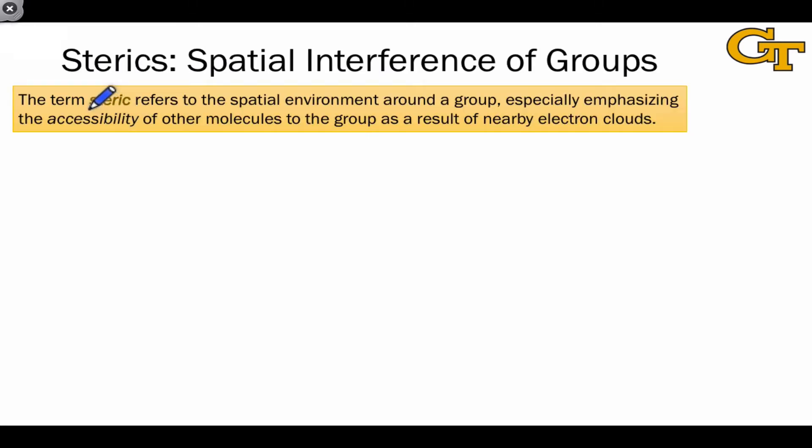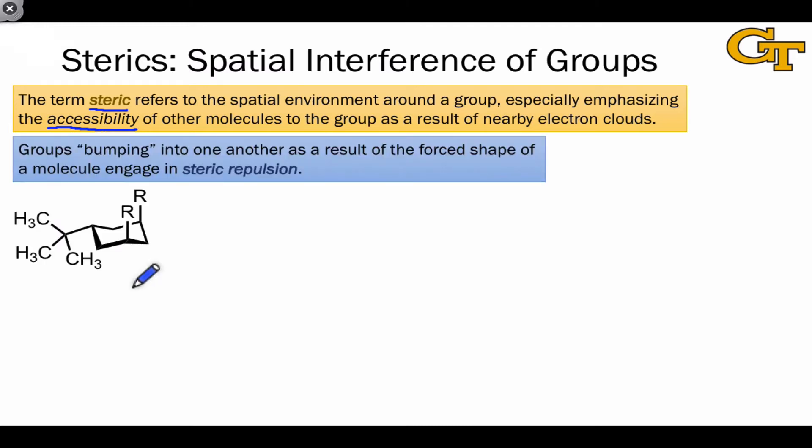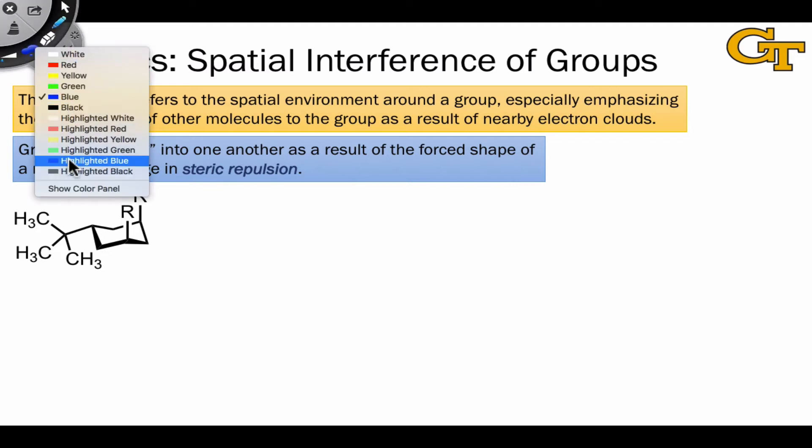As we just mentioned, this term steric refers to the spatial environment of electron clouds around an atom or group, and it especially emphasizes how accessible that group is to other molecules as a result of electron clouds around it, which will tend to repel incoming electrons. In some molecules with rather extreme structural features, such as the tert-butyl group shown here, certain groups get locked into particular orientations, and this can lead to a situation in which the locked groups engage in steric repulsion.